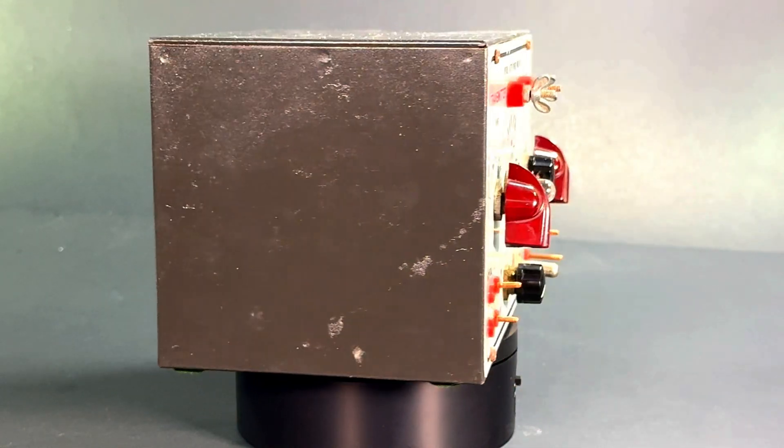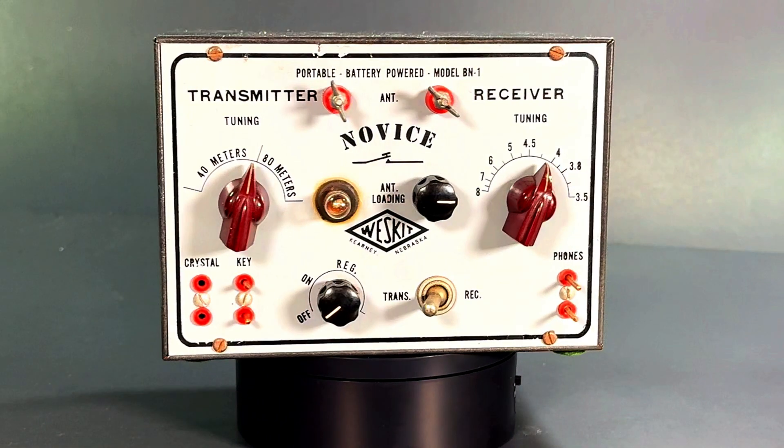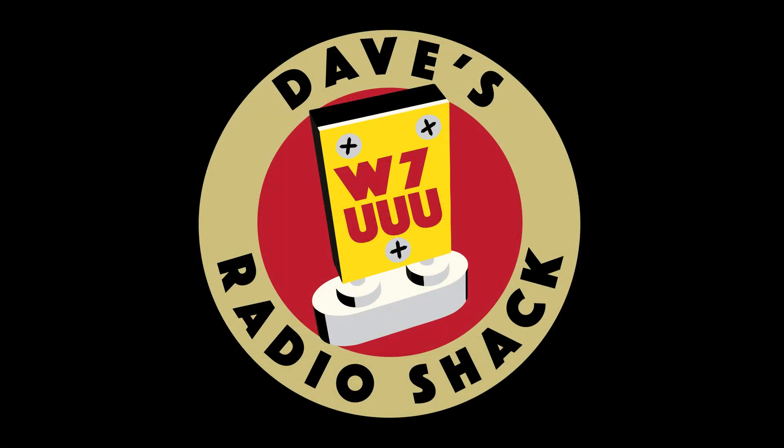But I hope you enjoyed seeing this, the Westkit BN1 Novice Transmitter Receiver from 1954. They're not very common. You'll probably never see another one again, and I really want to thank my friend Roy Ka7NGT for letting me borrow his unit to experiment with and to make this video. So thanks for watching. This is Dave W7UU and Dave's Radio Shack.